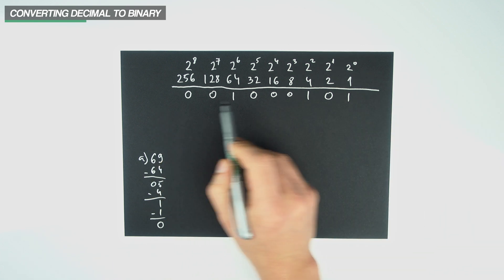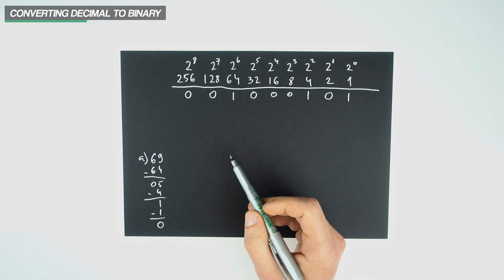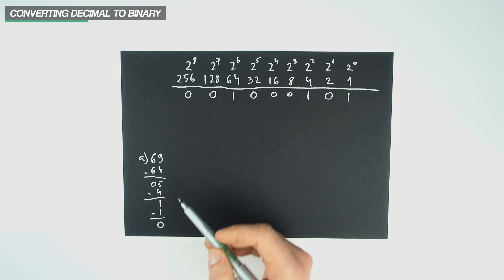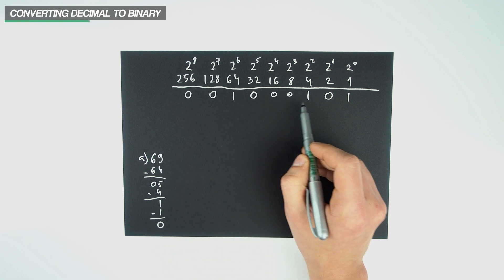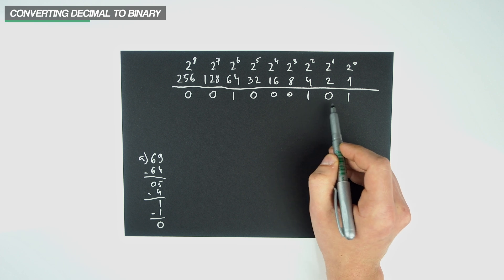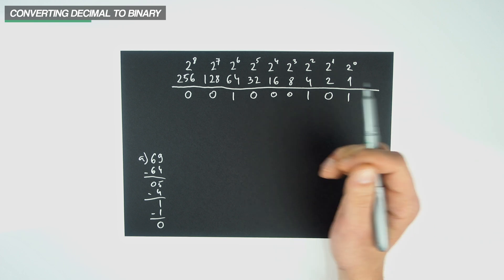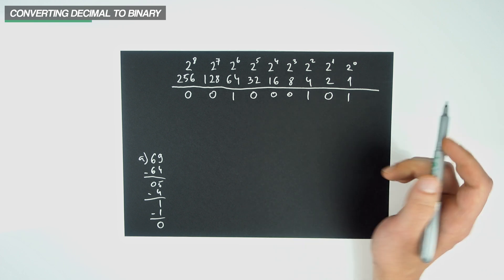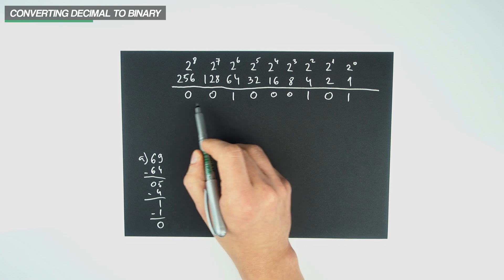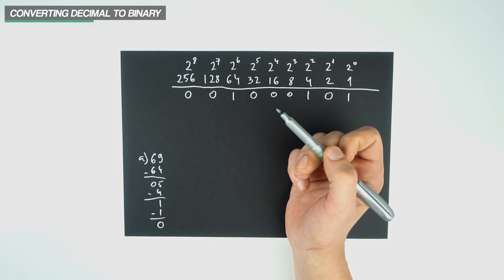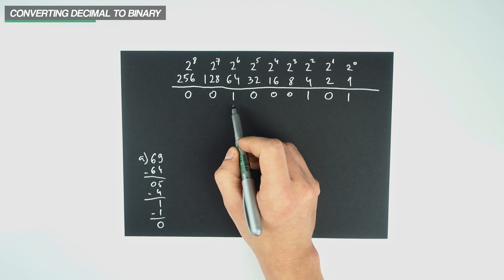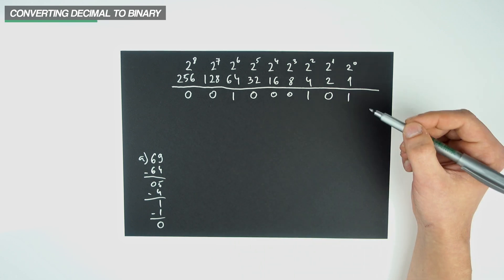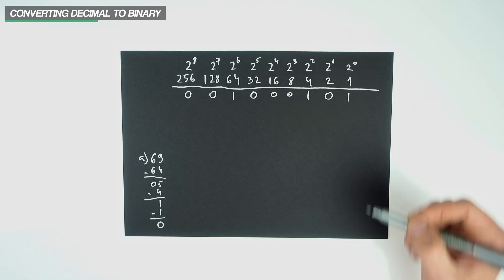If we look at our table, we'll see that the binary counterpart to 69 is 1000101. In this configuration, listing the leading zeros would also be correct, however we technically don't need anything to the left of the leftmost 1, because we might as well have an infinite amount of zeros there.